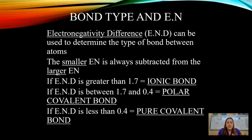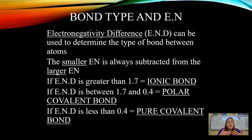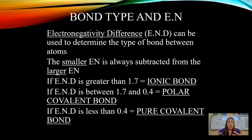Electronegativity difference is key. Looking on the periodic table you can see a difference in electronegativity, and charts show the values. For example, fluorine has an electronegativity of 4.0 and francium has 0.7. The yellow colors are lower electronegativities and the purples are higher. When looking at different elements, you want to figure out what type of bond they will form — ionic, polar covalent, or pure (non-polar) covalent.